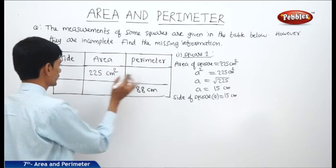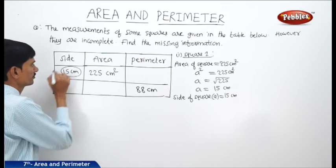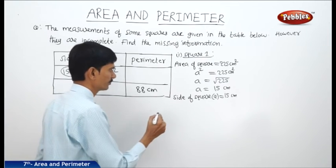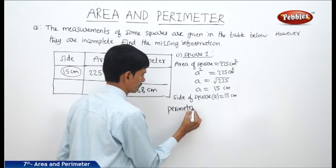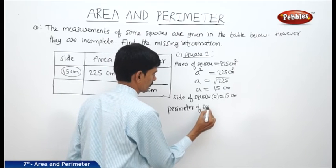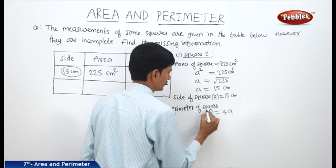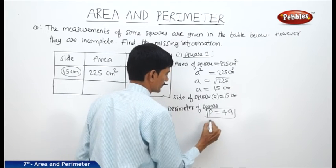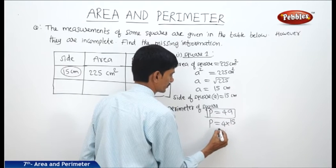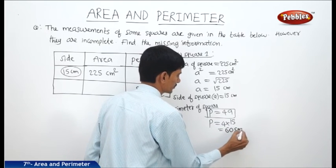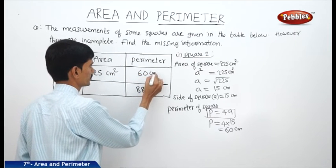Then we have to find the perimeter of square 1. The side is 15 centimeters. Using the perimeter formula P equals 4A, we get P equals 4 into 15, which equals 60 centimeters. So the perimeter of the square is 60 centimeters.